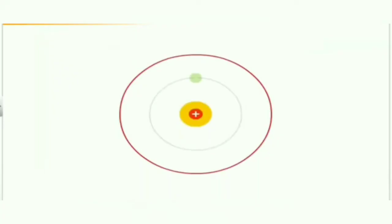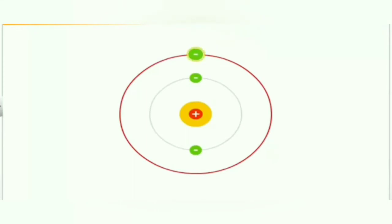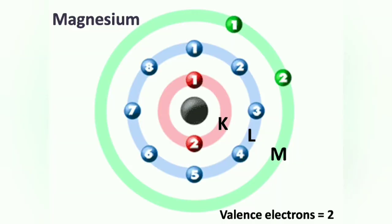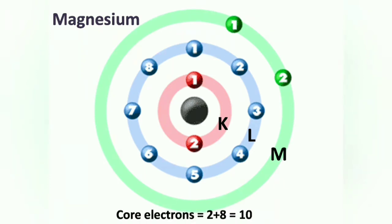In every atom, a fixed number of electrons are present in each shell. The electrons present in the outermost shell of an atom are called valence electrons. For example, in magnesium, the outermost shell is the M shell and there are 2 electrons present in it, so magnesium has 2 valence electrons. The remaining electrons are known as core electrons. In magnesium, 2 + 8 = 10 electrons present in K and L shells collectively are known as core electrons.